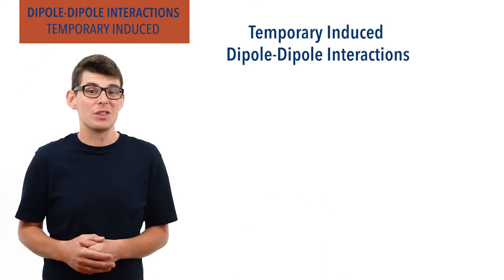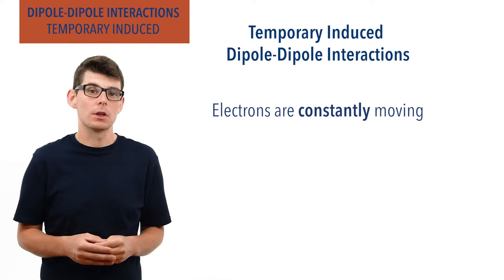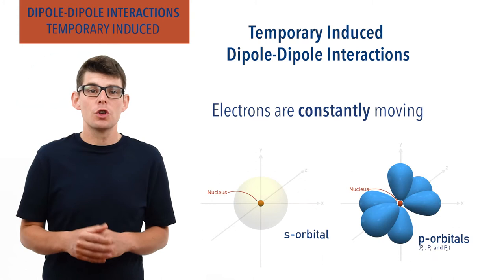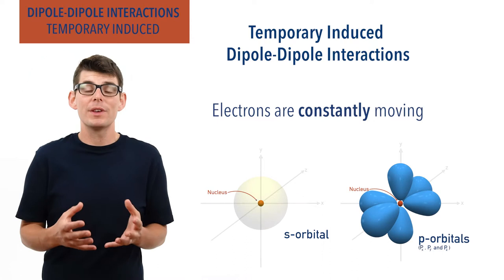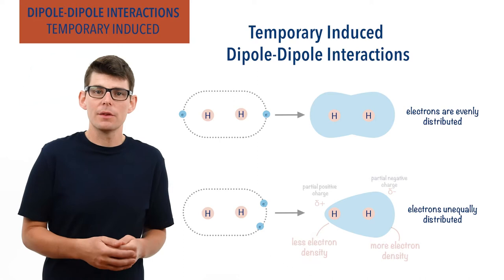Electrons are constantly moving very fast. Whether they're in an atomic orbital around an atom or in a bonding orbital between two atoms in a covalent bond, they are still constantly moving. The orbital shapes we draw show the area the electrons are likely to be in at any one time — they don't show exactly where the electrons are. Because of this constant movement, at any one moment in time, the electrons in a covalent bond between two atoms may not be equally distributed or shared between them. If the electrons are closer to one atom more than the other, a small dipole moment will form.